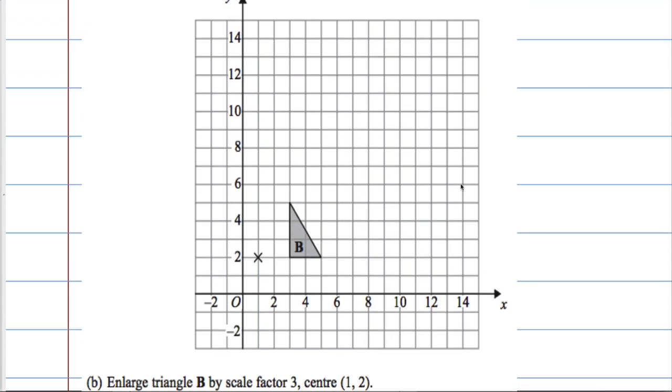In the next part we've got another grid with a triangle B and we're asked to enlarge it by a scale factor 3 with a centre 1, 2. If the scale factor is 3 that means every side should get 3 times longer. And here's the centre. How do we do it?